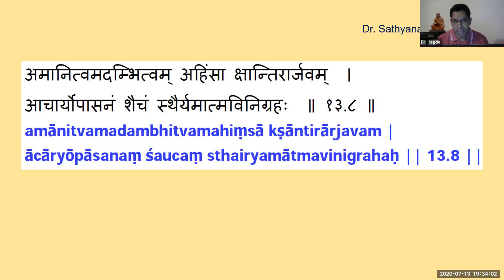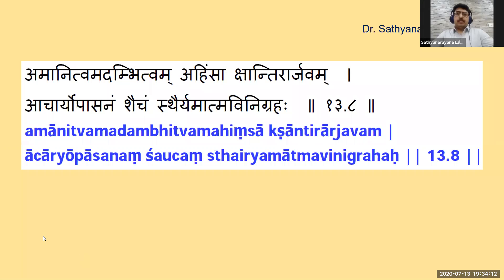From the eighth verse onwards, we see a sudden shift. We have moved from Kshetra Kshetrajna Prakriti Purusha to the other word which is called Jnanam. What is Jnanam? Dr. Sathya Narayana, please explain. From verse 2 to 7, Krishna concludes his analysis of Kshetram and Kshetrajna. Now Krishna takes up the third topic, Jnanam.